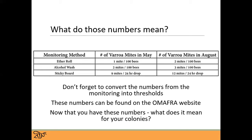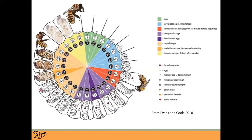Now that you have these numbers, what exactly does it mean to your colony? Everyone knows varroa mites are bad, but if I've done the monitoring and I have mites, what do I do with this information? It's really critical to understand varroa mite biology. Don't be thrown off by how busy this graphic is — it's really just to illustrate visually the life cycle of the mite and how tightly linked it is with the honeybee brood.